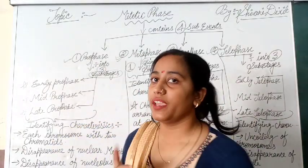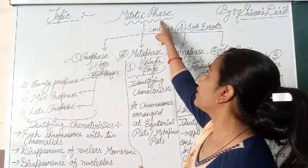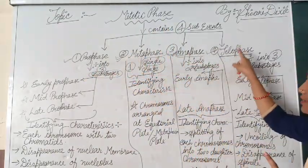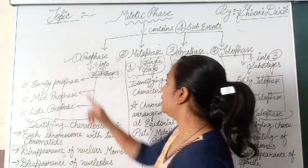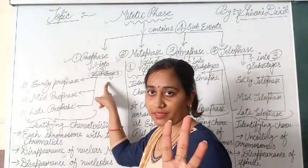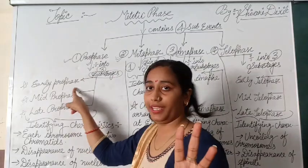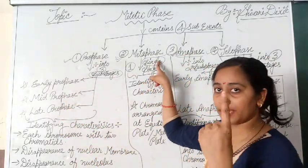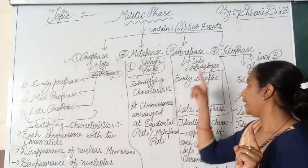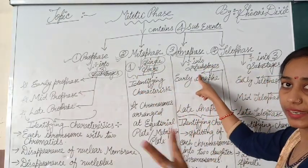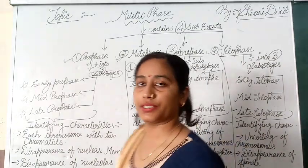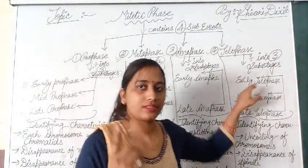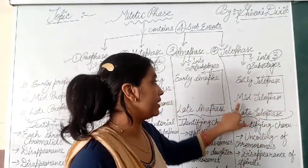Let us recall. Mitotic phase has 4 sub-stages: prophase, metaphase, anaphase, and telophase. Prophase contains 3 sub-stages — early, mid, and late. Metaphase contains only 1 stage. Anaphase contains 2 sub-stages — early and late. And the last one, telophase, contains 3 sub-stages — early, mid, and late.